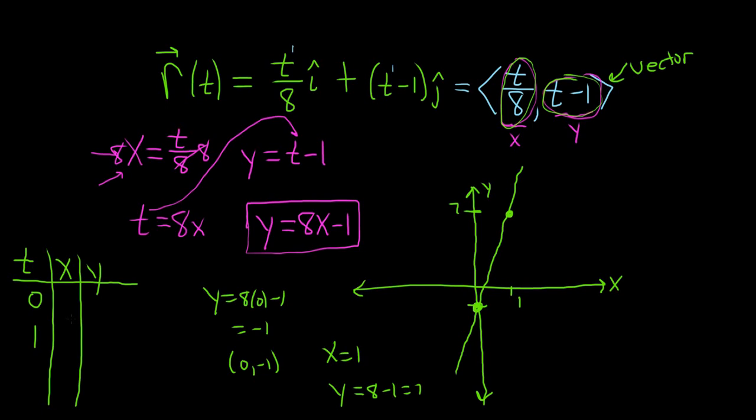So when t is 0, you get 0 over 8, so you get 0, and y is negative 1. So we're here. We're in this place here. We already actually knew that. That was lucky and coincidental. So this corresponds to t equals 0.